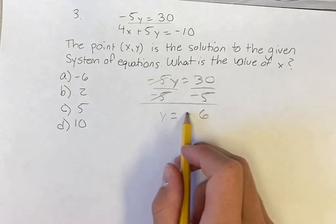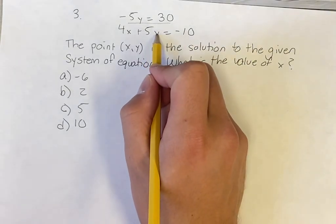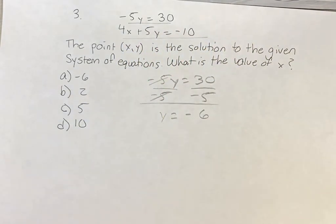So this is our value of y, and now we can plug this value, negative 6, in for y into this equation. Then we'll have this equation we can solve for x.